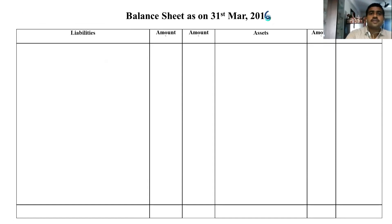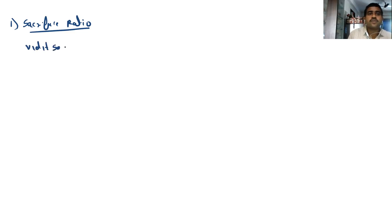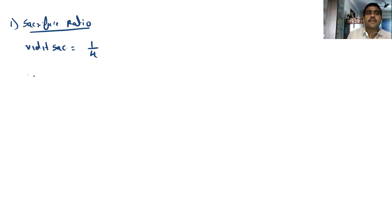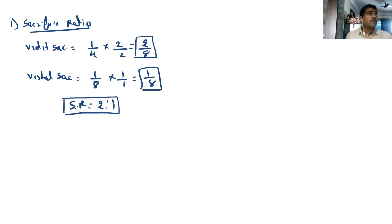We are ready with the topic. The first thing we will do is some working. First working: find the sacrifice ratio. Vidit sacrifices 1/4 from his share — so we keep 1/4 as it is, no multiplication. Vishal's sacrifice is equal to 1/8. Making the LCM: 2/8 and 1/8. So our sacrifice ratio comes to 2:1.